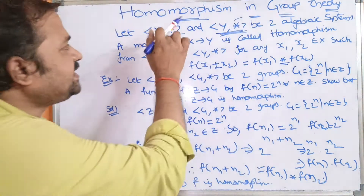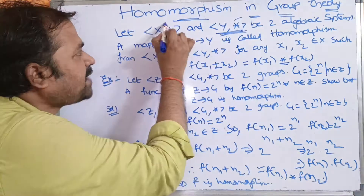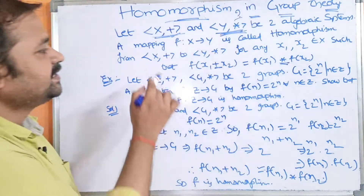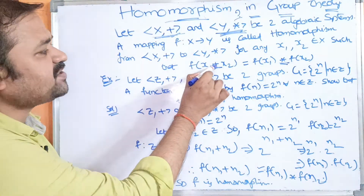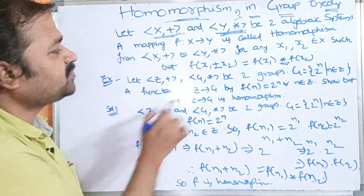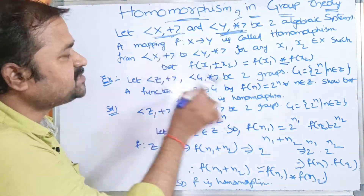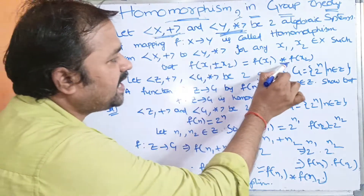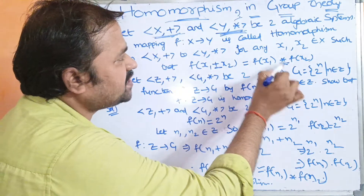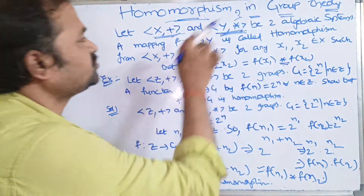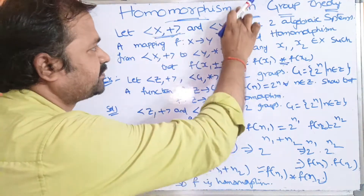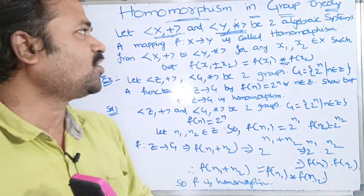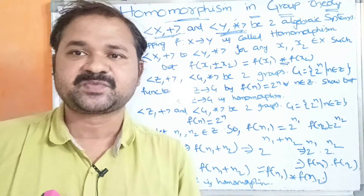For example, if the binary operations were − and ?, then in place of + we write − and in place of ⋆ we write ?. This is the definition of homomorphism.